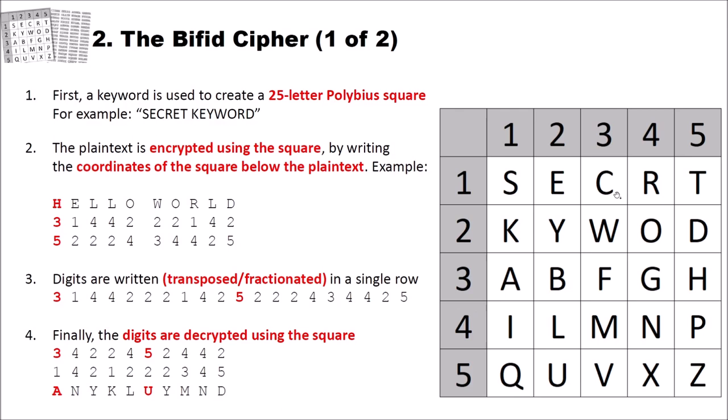In the end, the ciphertext that we obtain has, of course, the same length as our plaintext. But it has been, at first, substituted by digits. These digits then were transposed and fractionated. And finally, again, substituted using the Polybius square. And I also marked here which letters are influenced by our first letter in the plaintext. And these are actually two, since, as I said, we fractionated our digits.